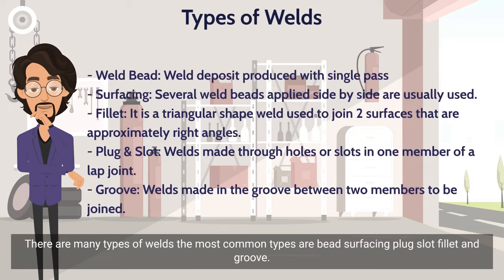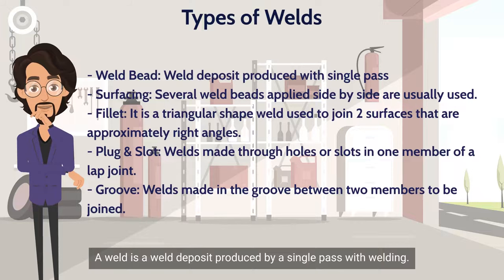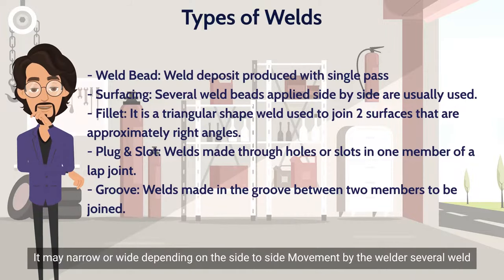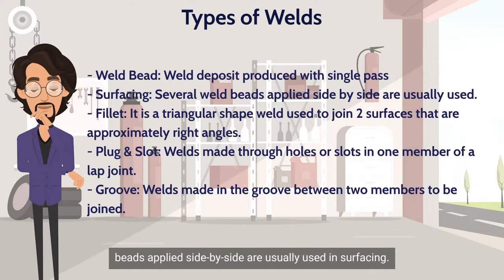There are many types of welds. The most common types are bead, surfacing, plug, slot, fillet, and groove. A bead weld is a weld deposit produced by a single pass with welding — it may be narrow or wide depending on the side-to-side movement by the welder. Several weld beads applied side by side are usually used in surfacing.